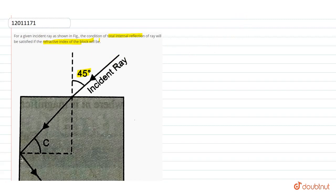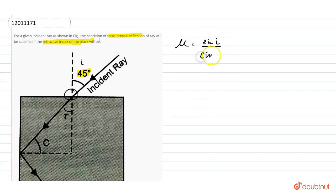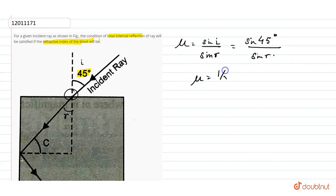So what do we do for this? We call this the incident angle I. So mu is sine I upon sine R — that means mu equals sine 45 degrees upon sine R, which gives us mu equals 1 upon root 2, divided by sine R.